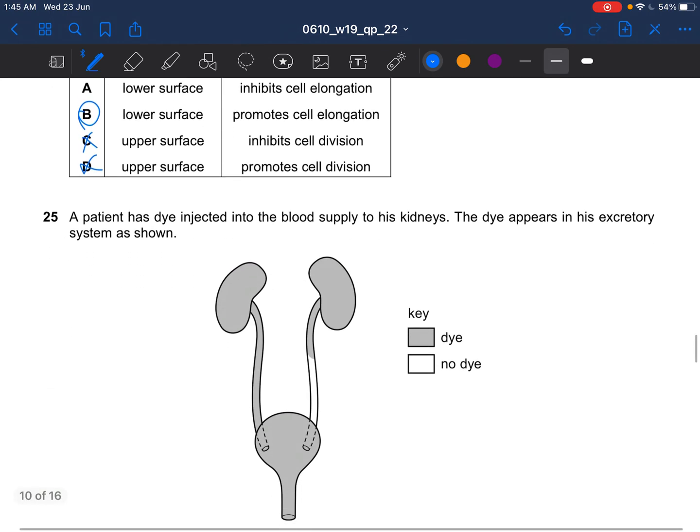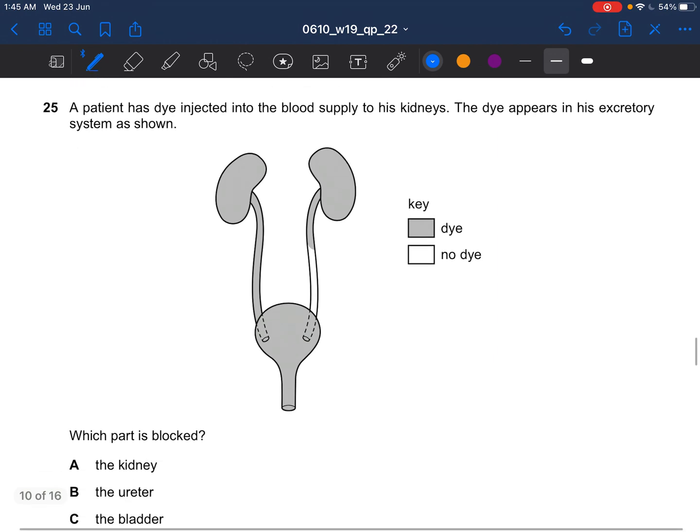Next question. The patient has dye injected into the blood supply to his kidneys. The dye appears in his excretory system as shown. Which part is blocked? This would be the ureter. So the answer is B. This one over here is your kidney. This is your bladder. And this is your uretera.